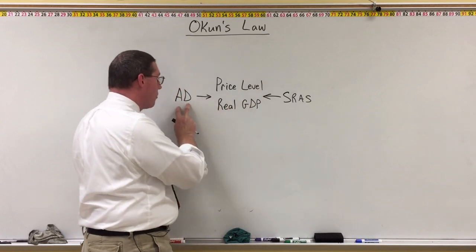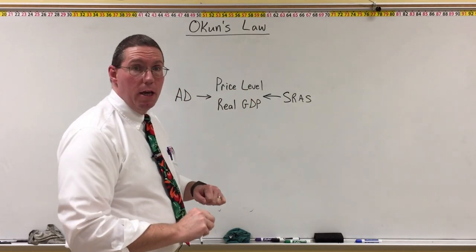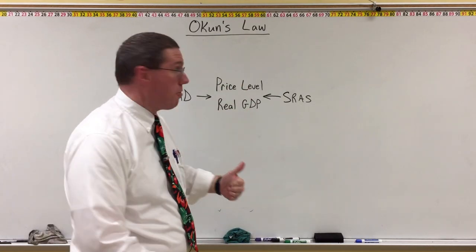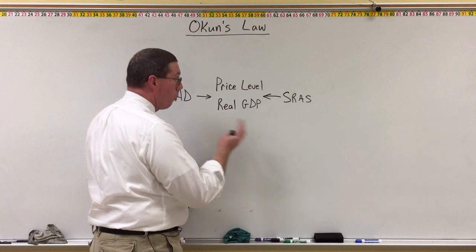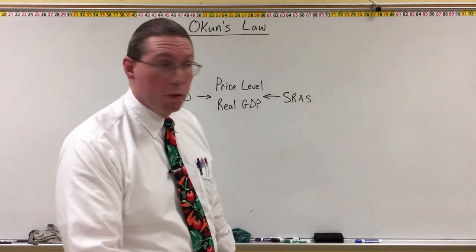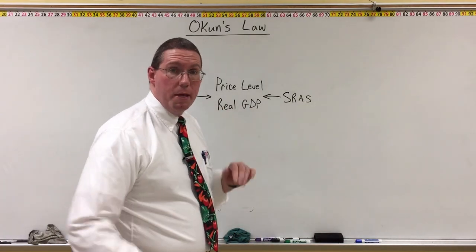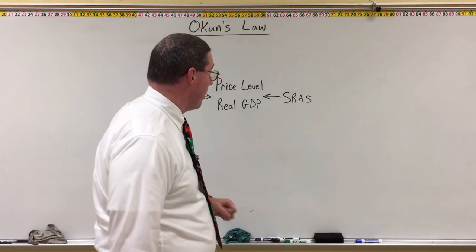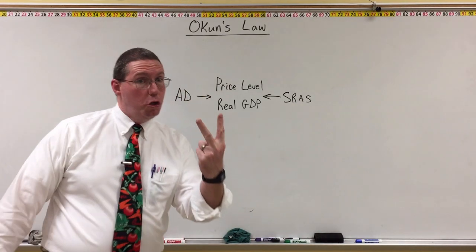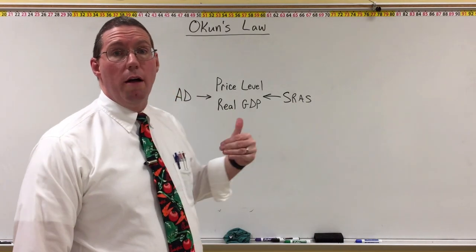We can see how aggregate demand and short-run aggregate supply in the aggregate market affect price level stability, because changes in aggregate demand and short-run aggregate supply result in changes in the consumer price index, which is how we measure the price level. We also know that real GDP is related to economic growth — higher real GDP means more economic growth, lower real GDP means less or no economic growth. So it's obvious how aggregate demand and short-run aggregate supply affect two of the three macroeconomic goals, but what we're missing here is the goal of full employment.